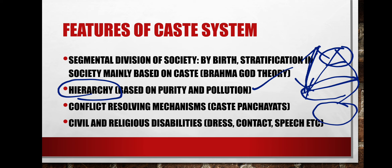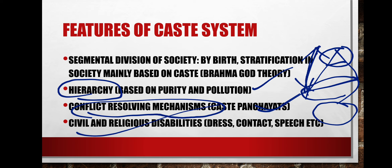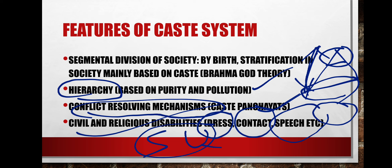Shudras and untouchables are given the least priority. Another feature is conflict-resolving mechanisms such as caste panchayats in villages, which solve problems within their own caste. There are also civil and religious disabilities — rules regarding dressing style, contact, and speech. Shudras and untouchables historically had rules preventing them from touching upper-caste people, though such regulations are not commonly seen today.